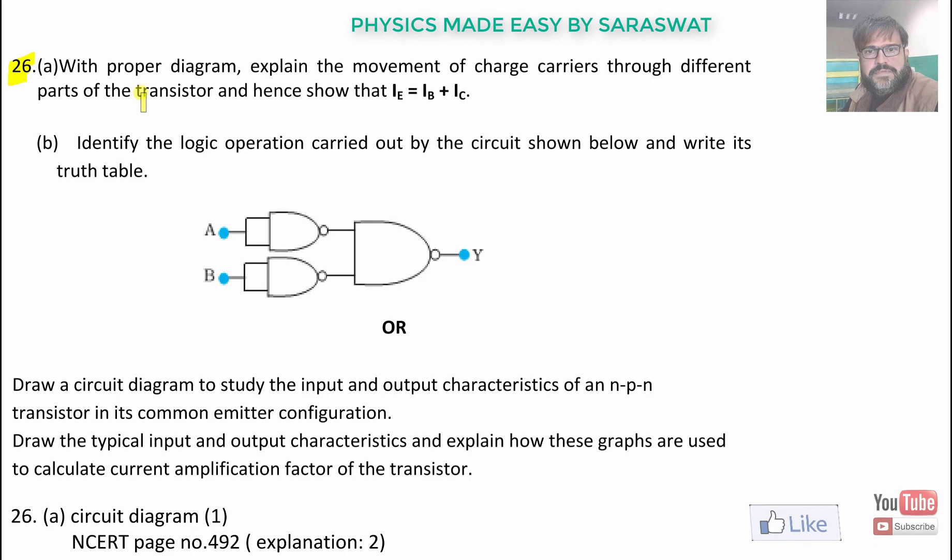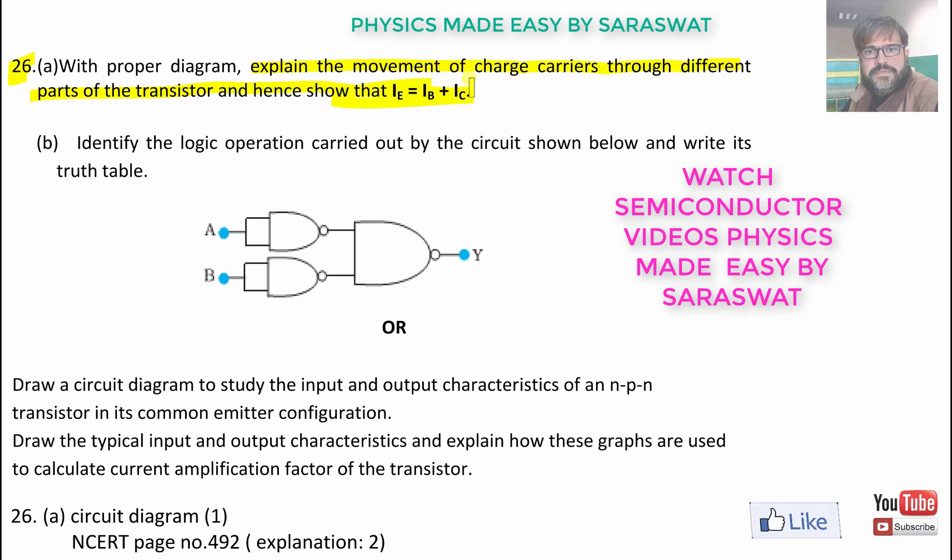Twenty-sixth question. With the proper diagram, explain the movement of charge carriers through different parts of the transistor and hence show that Iₑ = Iᵦ + Iᴄ. This we have done in semiconductor electronics video. B part. Identify the logic operation carried out by the circuit shown below and write its truth table. Over here is A. NAND gate will give A·Ā = Ā. B·B̄ = B̄. This will give Ā·B̄ bar is Ā̄ + B̄̄ by De Morgan's law. That becomes A + B. So, Y is A + B. This whole makes an OR gate.